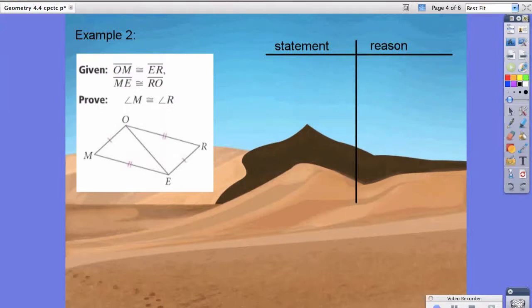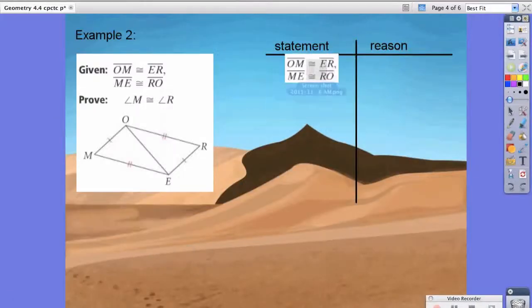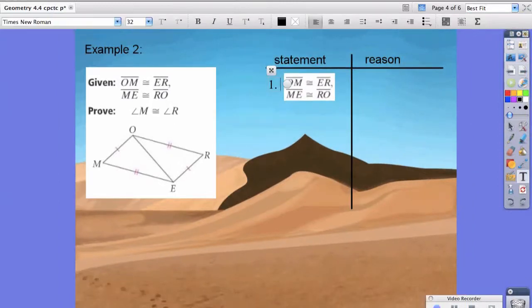For example two, same rules still apply. Line segment OM is congruent to line segment ER. Line segment ME is congruent to line segment RO because this is given. Step two, again, two triangles are touching. So, we could say OE is congruent to line segment OE because of the reflexive property.